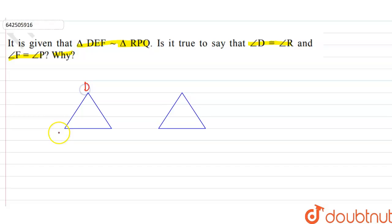In this question, it is given that this is triangle DEF. Triangle DEF is similar to triangle RPQ.